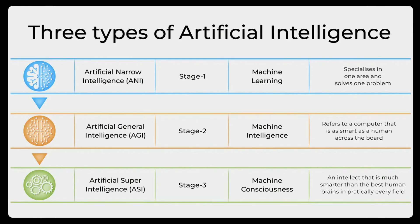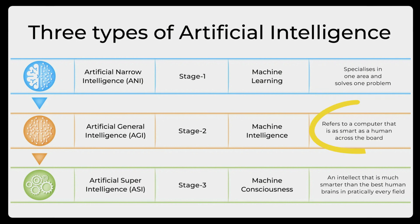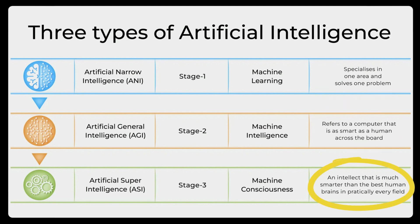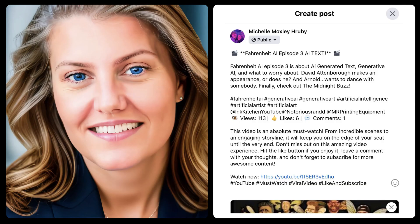There are three different types of artificial intelligence: artificial intelligence that will assist us, artificial intelligence that will replace us, and artificial intelligence that will do things that we could never do without it. Let's focus on the assist us type.